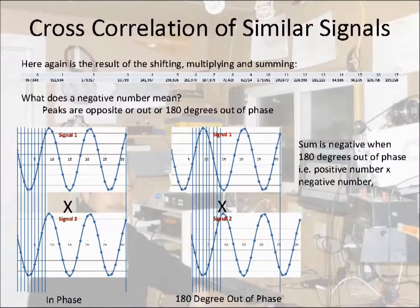Here's another important observation. In the previous slide, you saw that when the signals are in phase, you get a large positive number at delay zero and delay 12. However, when the signals are 180 degrees out of phase, you get the opposite. You get a large negative number. In this case, the signals are out of phase at delay six. So when the signals are in phase, there's a large positive sum. And when 180 degrees out of phase, there's a large negative sum.